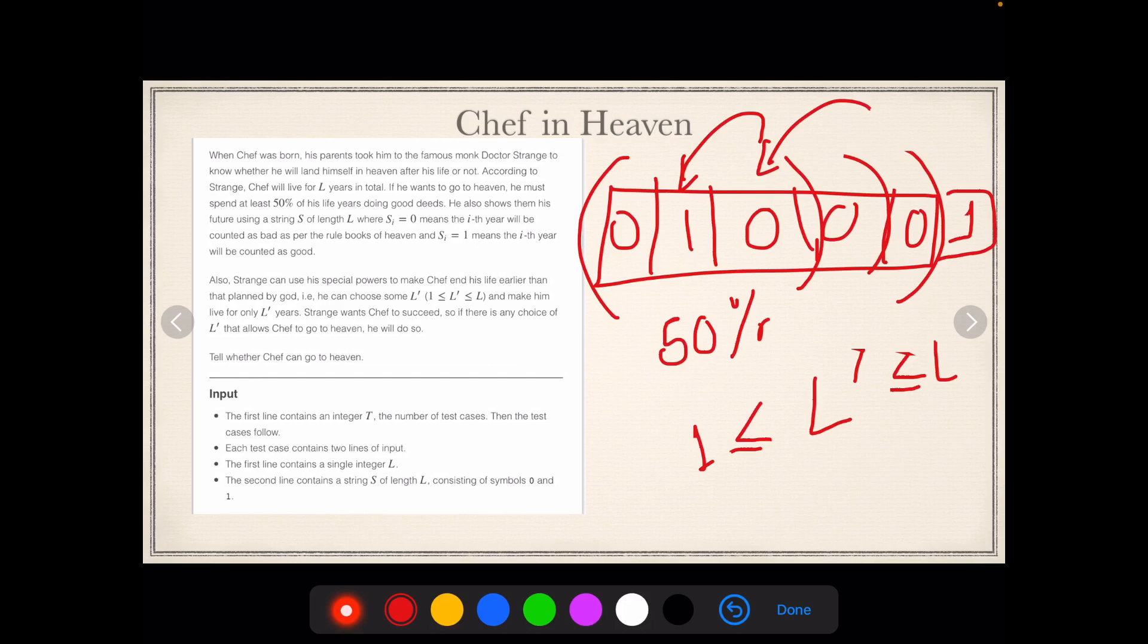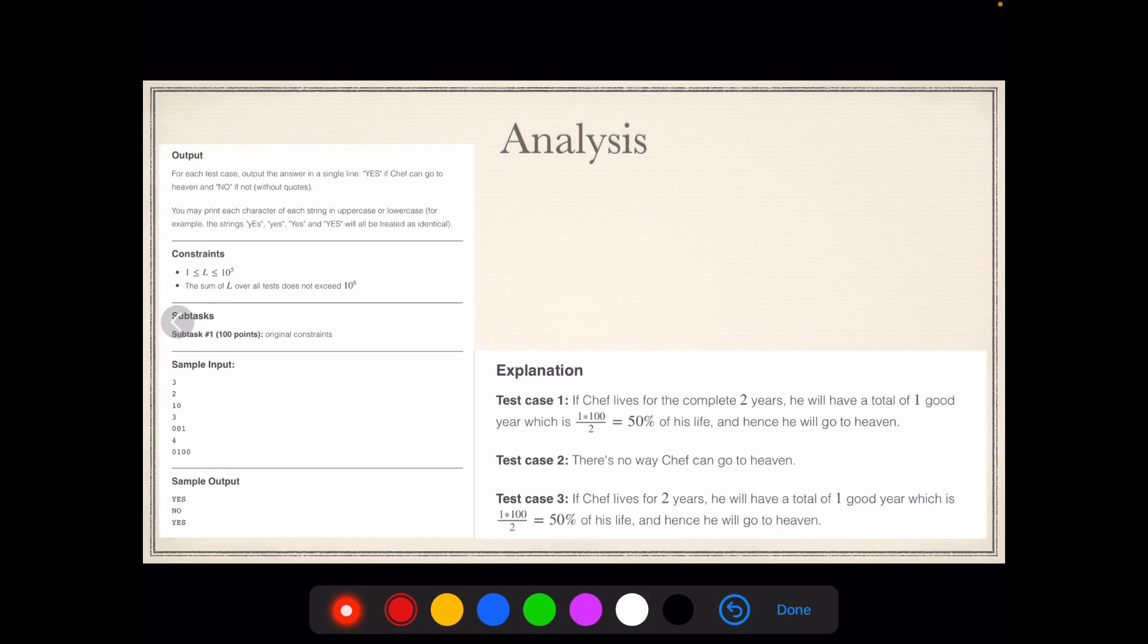If you have that power of reducing it, now the condition is you will have to see that, given the string, will the Chef go to heaven or not. I'll give you a better explanation to this, just hold on. So let's go to the next slide for the analysis part.